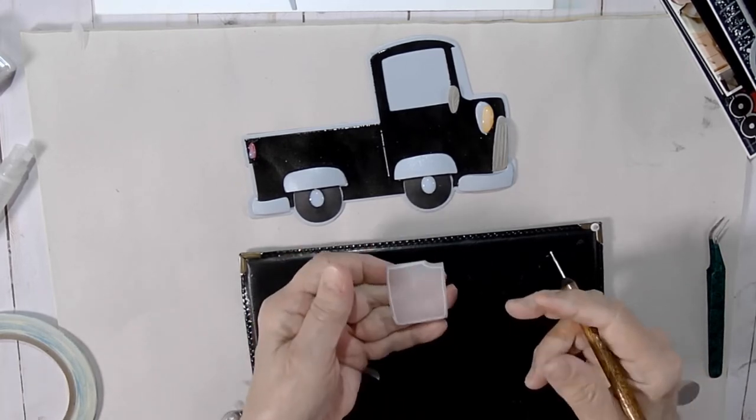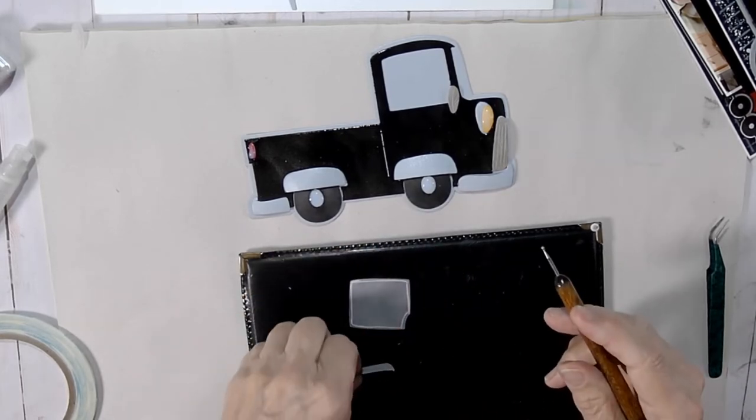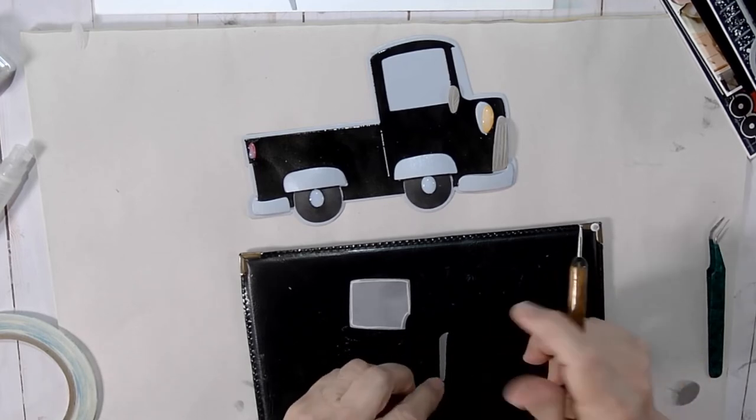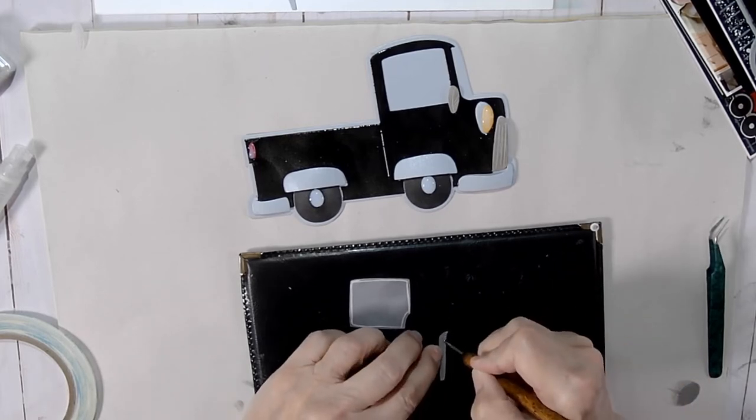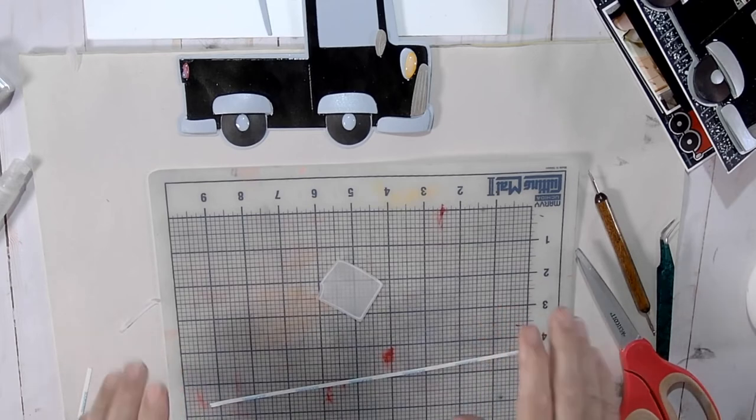which is going to help keep those edges turned down because vellum when it is exposed to humidity does have the issue of flipping up. This way it keeps it down and actually sculpts that window as well.